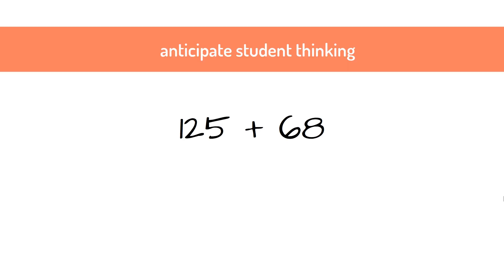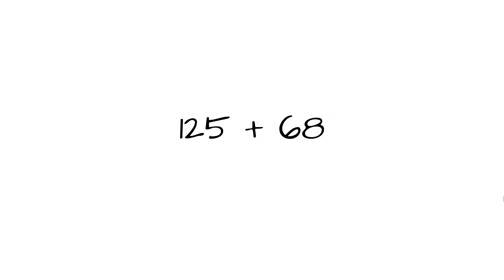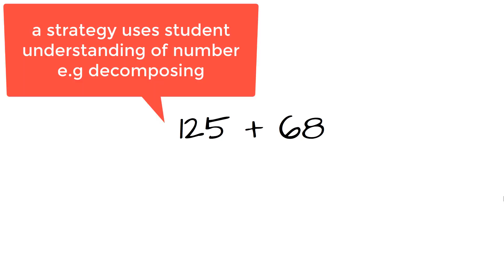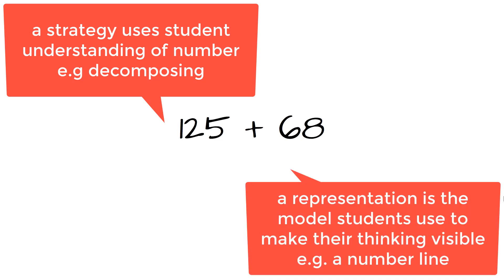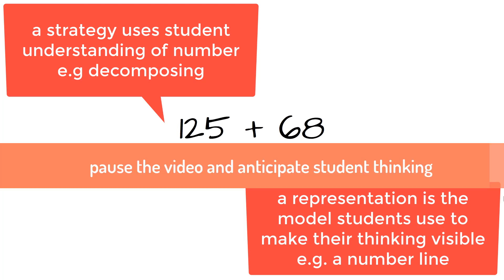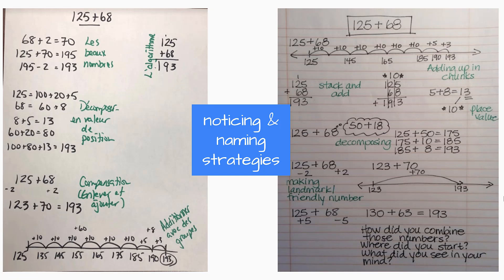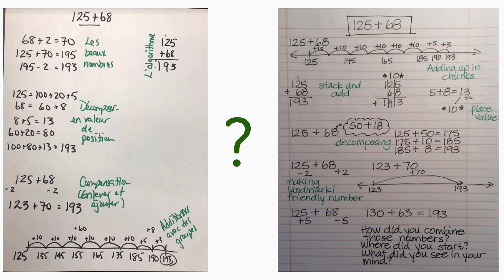We're going to try anticipating what students might do with a Number Talk now. I want you to pause the video and think about all the ways that your students might solve this particular problem using mental math. Think about the strategies students would use and also think about the representations they would use to make their thinking visible. Pause the video and anticipate all the ways that students are going to solve this problem. Yours might look similar, or you might not be sure of all of these different ways of doing it and what they're called, and you might want to do some learning in that.